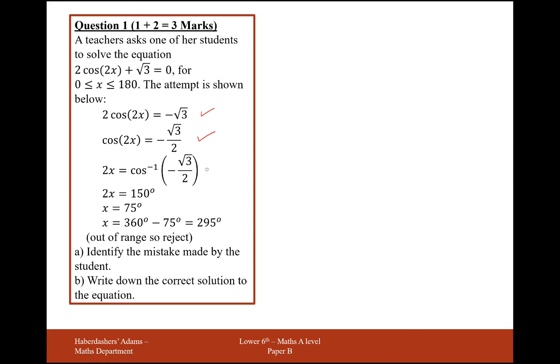And I've done cos inverse of minus root 3 by 2. Yeah, that's a good way to find the first solution. So yeah, 2x is 150.